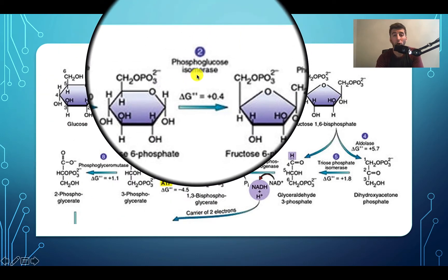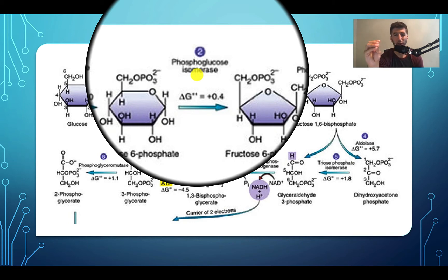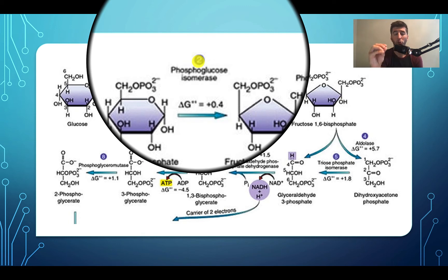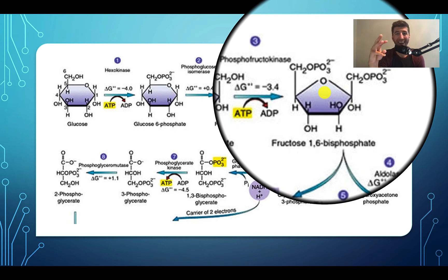Next, we use the enzyme phosphoglucose isomerase to change the structure of glucose-6-phosphate into a different sugar: fructose-6-phosphate. Isomerases change the structure without changing the constituents - just rearranging the carbons - generating fructose-6-phosphate, which is an isomer with the same constituents arranged differently.